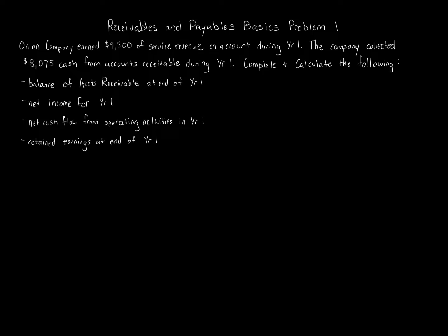Accounts receivable and accounts payable can be challenging when you're first starting out, even with practice, because it can be difficult to determine what the information is telling you. We're going to approach this using the accounting equation and then calculate all the respective items. Assets equals liabilities plus equity — specifically stockholders' equity. We're going to go through these transactions and record them on the respective accounts of the accounting equation.